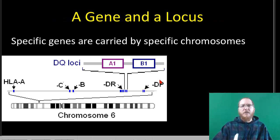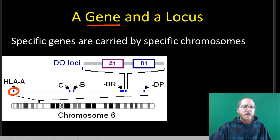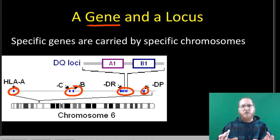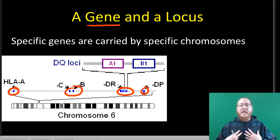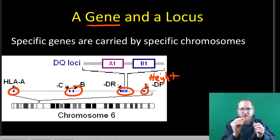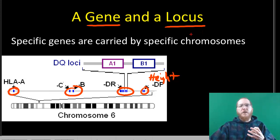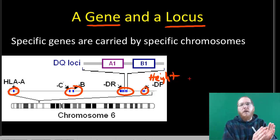As for why this happens: genes are located at specific places on a chromosome. If you look at chromosome 6 in humans and blow up a tiny section of it, you'll see specific areas where specific genes are found — they'll always be at those specific areas. They might have a different version of that gene, a different allele. For example, a gene for height at a particular spot on chromosome 6 could code for tall or for short. We call that location a locus, or loci in plural.